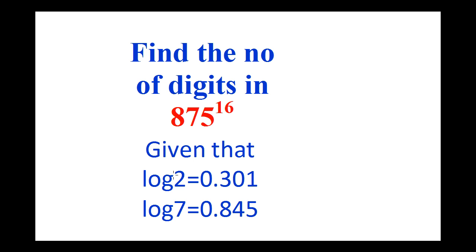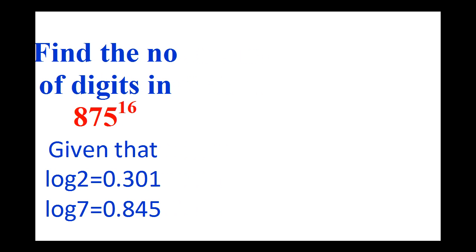Before that, we will first factorize this number. The given number is 875. Now that can be factorized. We can divide by 25. So when you divide by 25, this can be written as 25 into 35.